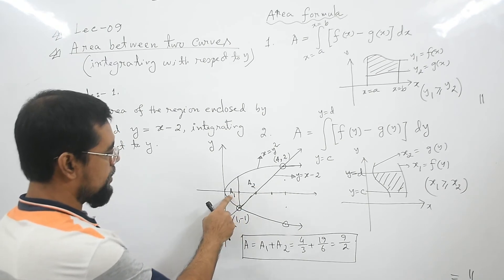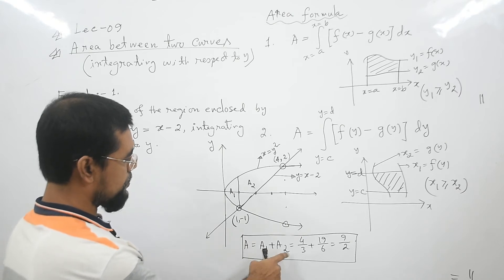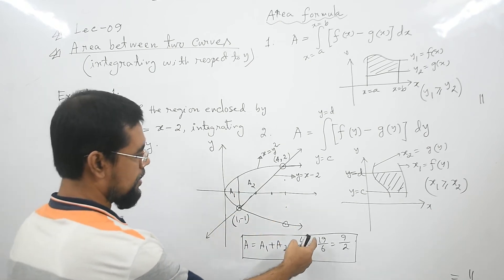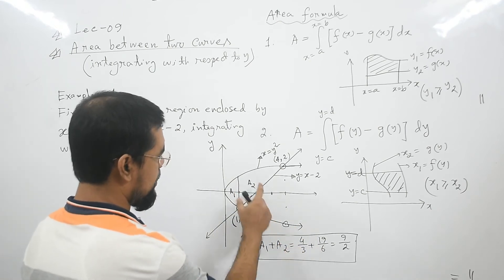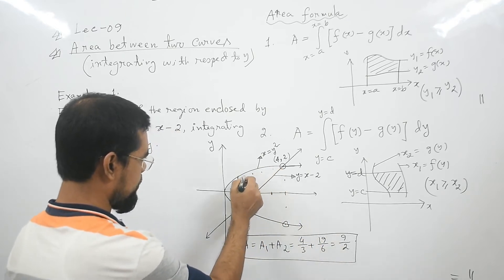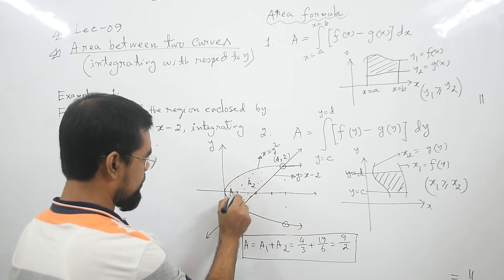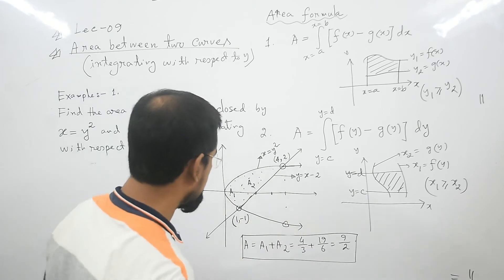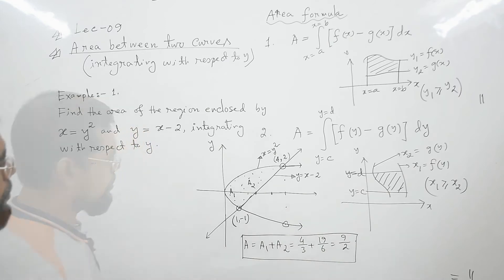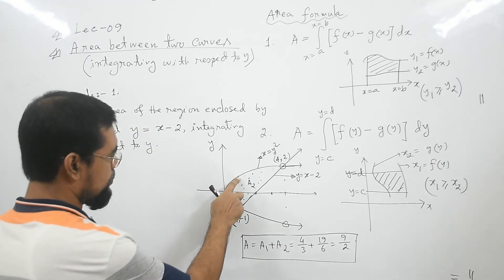The whole region was A1 plus A2. A1 was 4/3, A2 was 19/6, and the total answer was 9/2. So the area of this whole region integrating with respect to x, as done in our previous lecture, gave us 9/2.